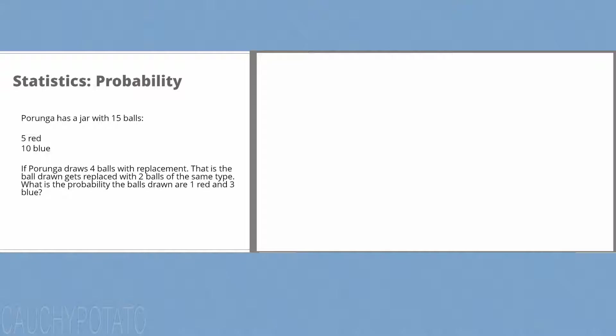If Poronga draws 4 balls with replacement — that is, the ball drawn gets replaced with 2 balls of the same type — what is the probability the balls drawn are 1 red and 3 blue?